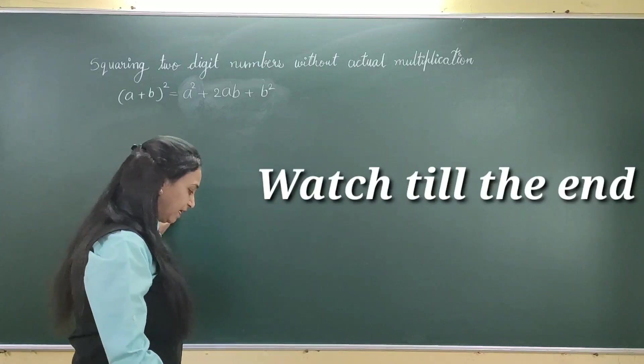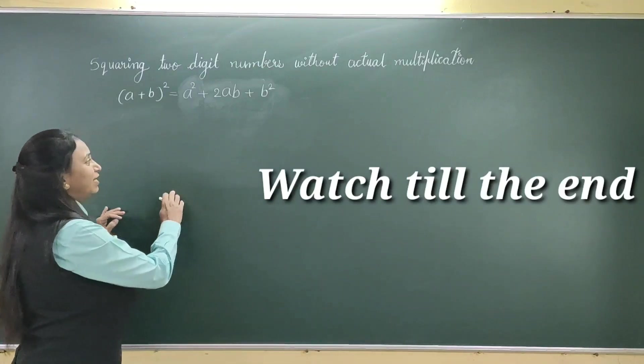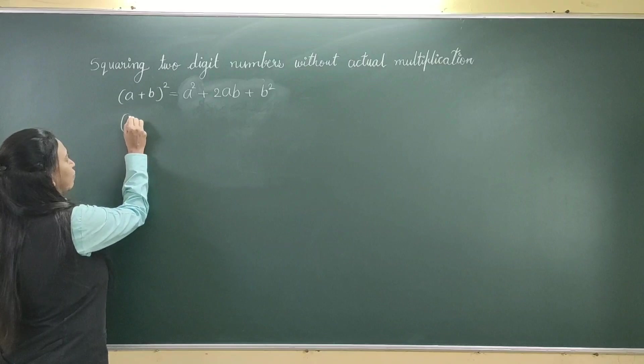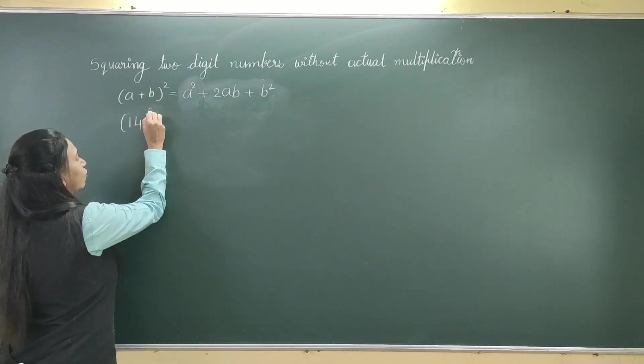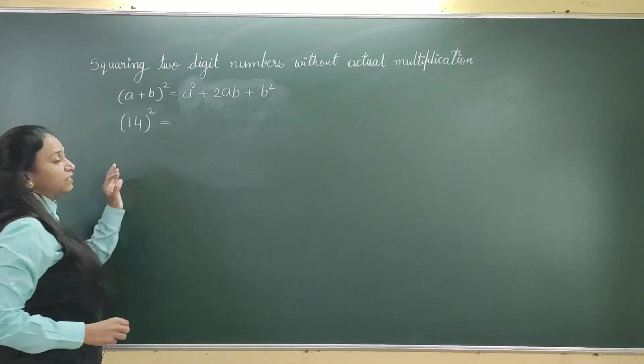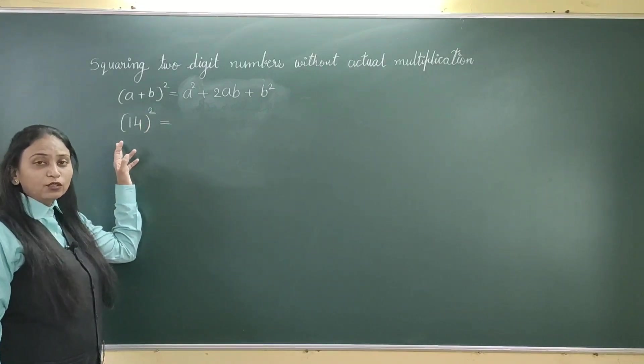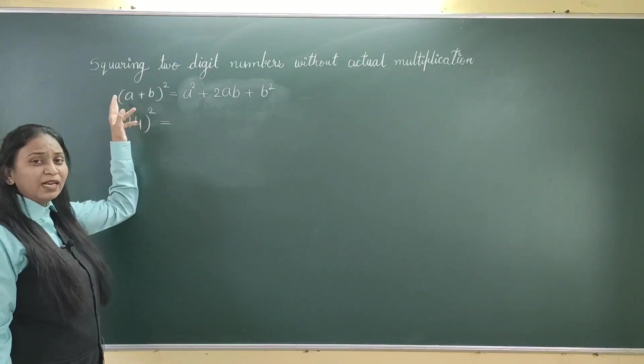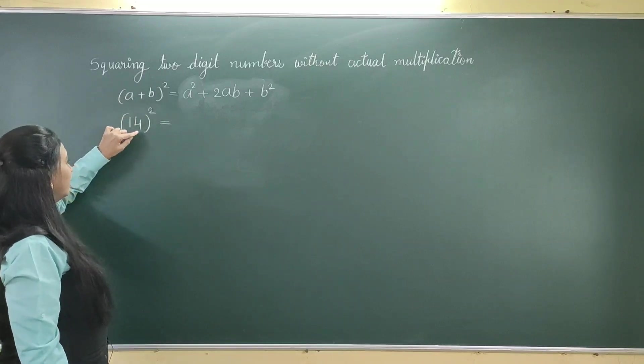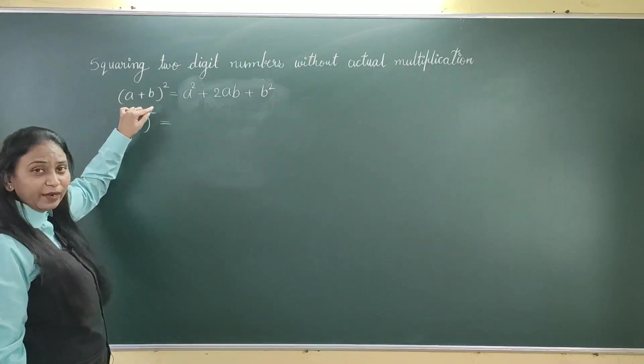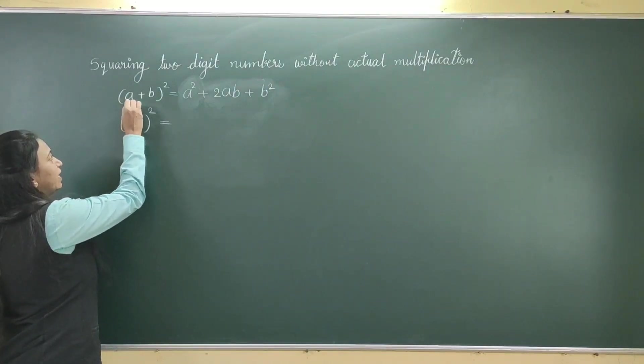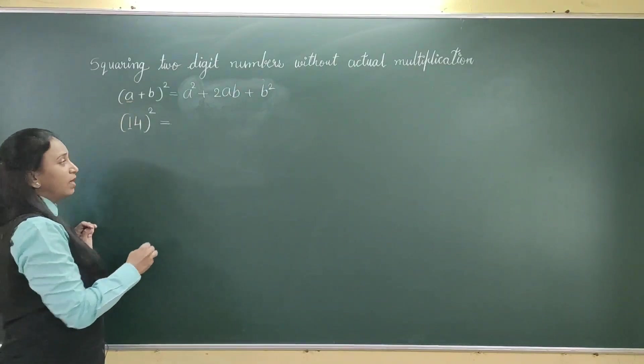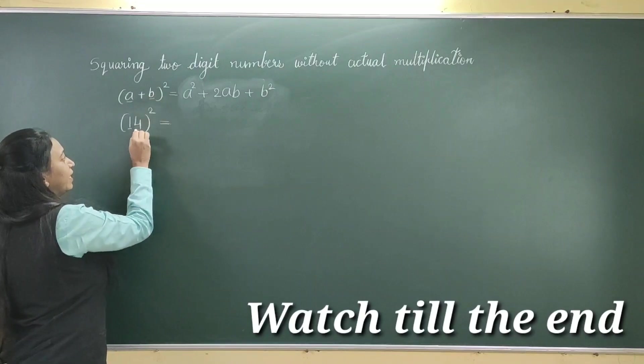For example, let us start with a two digit number. Let's say 14. How can we square this digit using this formula? Now, compare these two digits with a and b. So, 1 is a and b is 4.